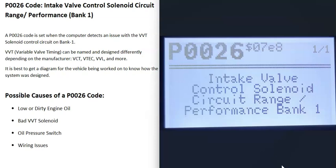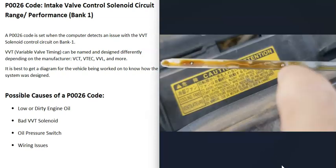The first possible cause of a P0026 code is low or dirty engine oil. Oil flows through the entire variable valve timing system, so if the oil is low or really dirty, that can cause issues. The first thing to do is check your engine oil and make sure it's not low or excessively dirty.